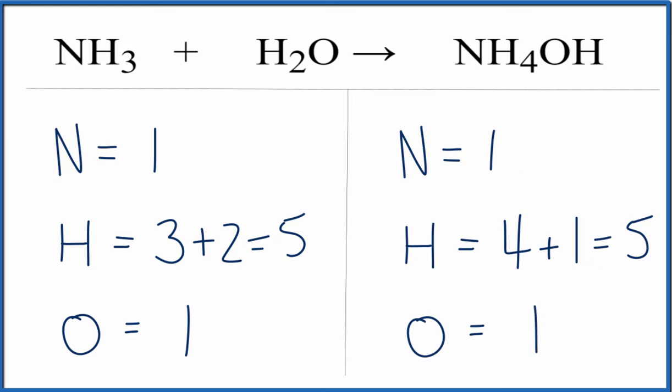And you can see the number of atoms on each side of the equation, it's the same. We have one nitrogen on each side, five hydrogens, and then one oxygen on each side. So this equation is balanced.